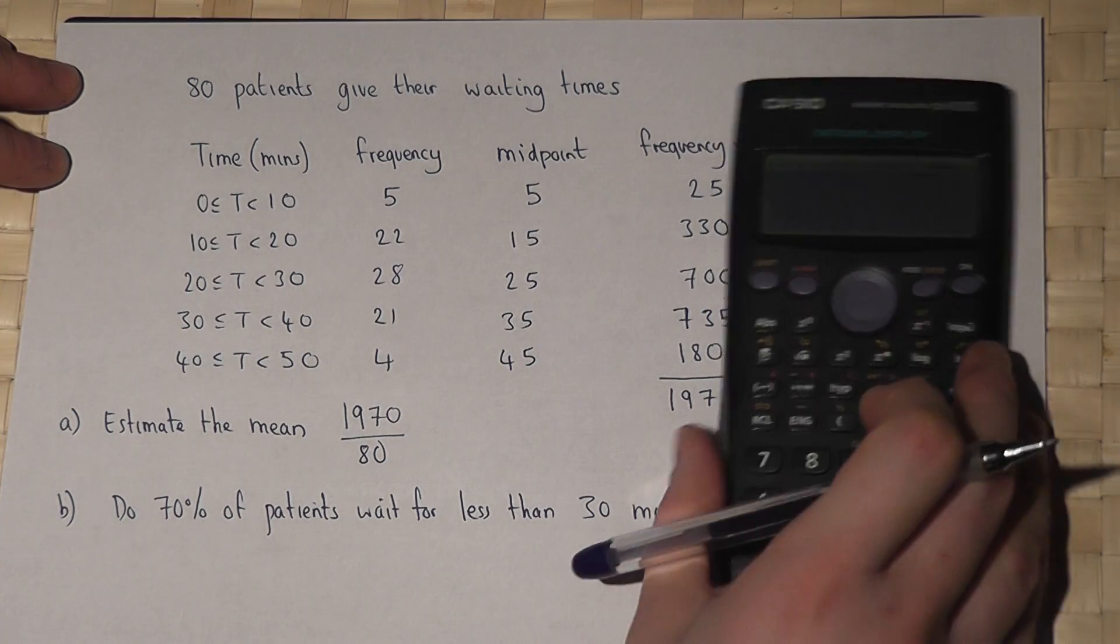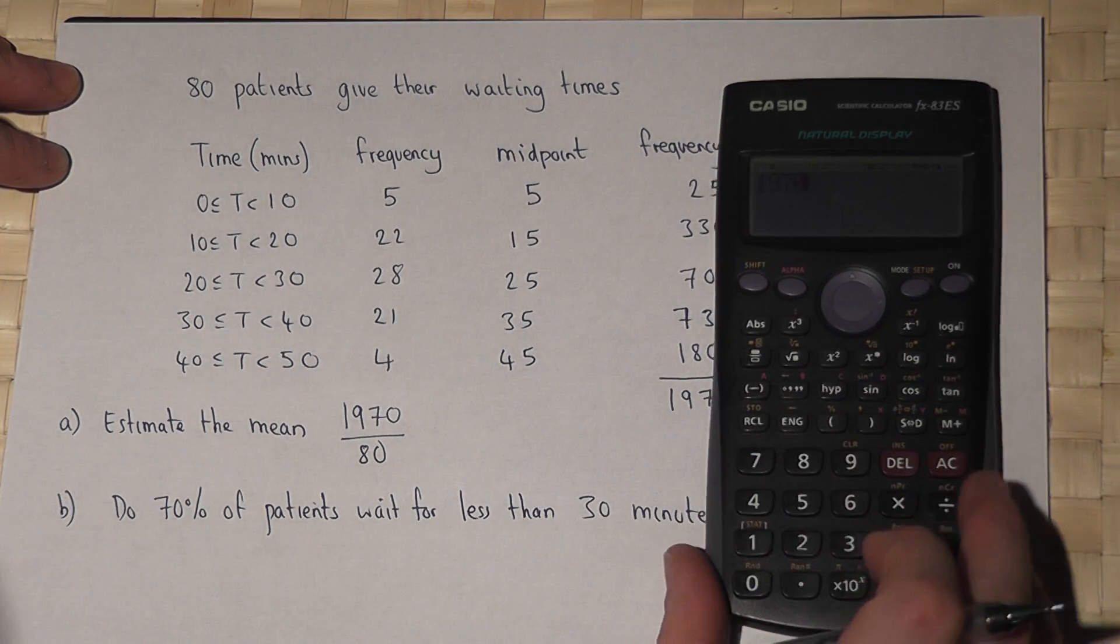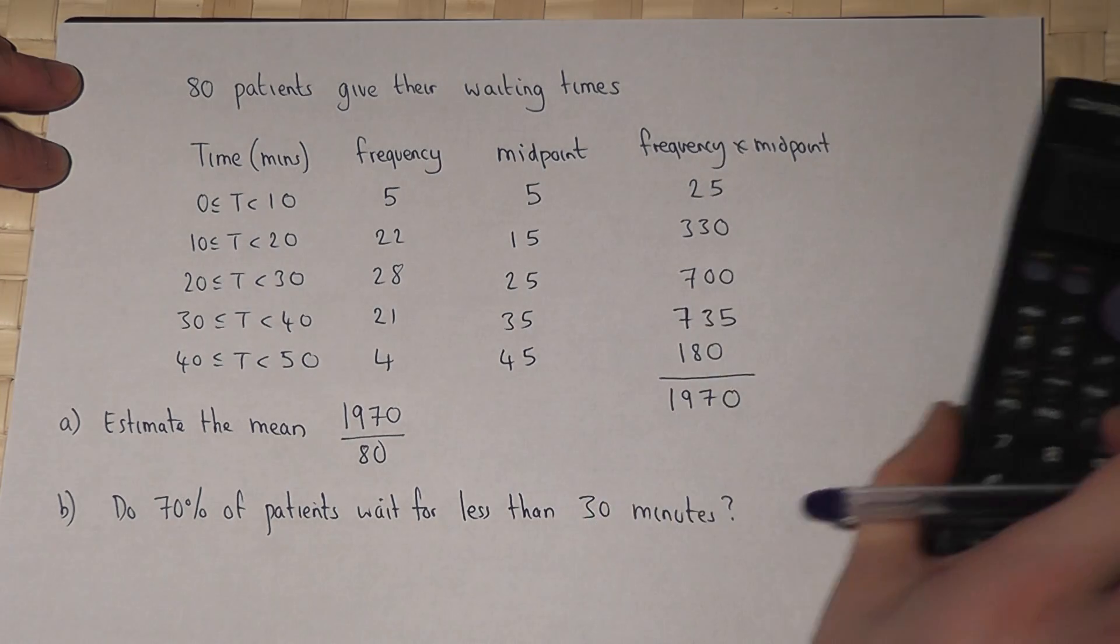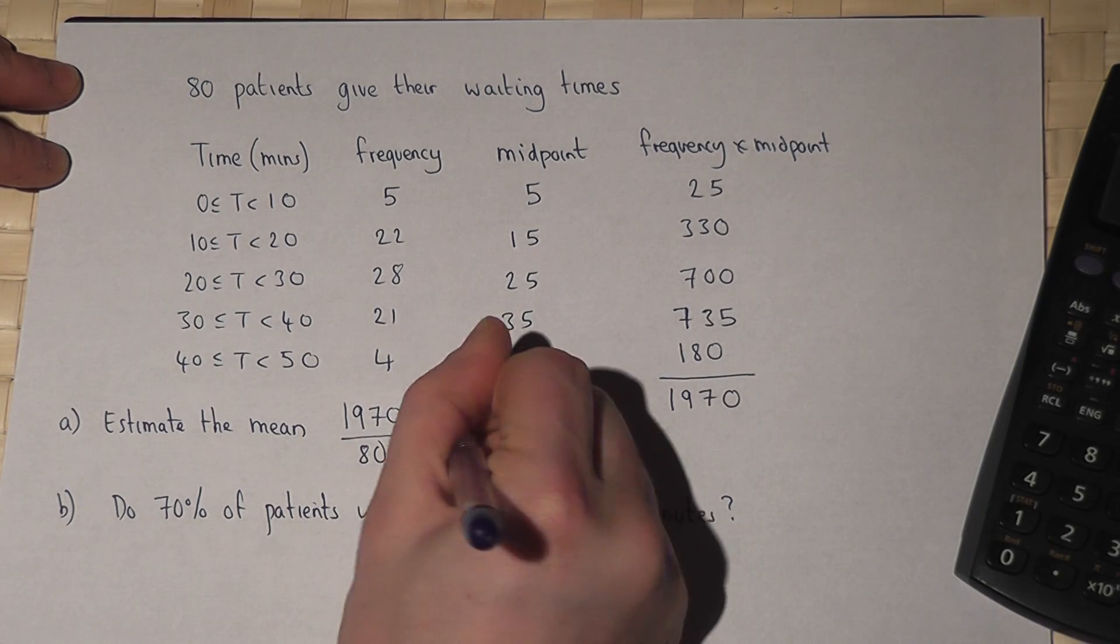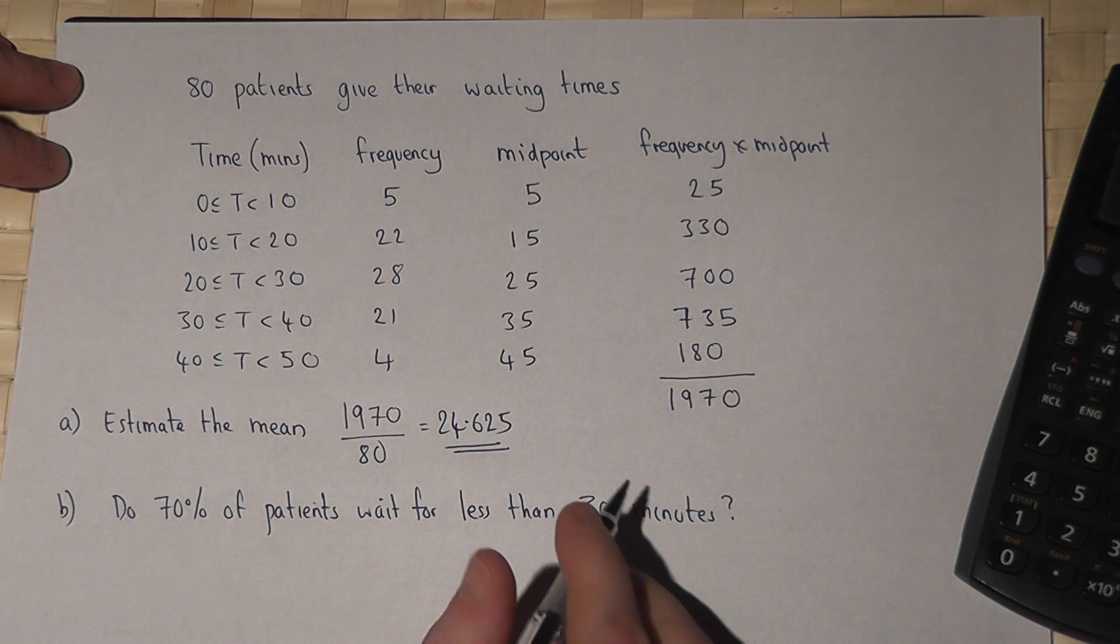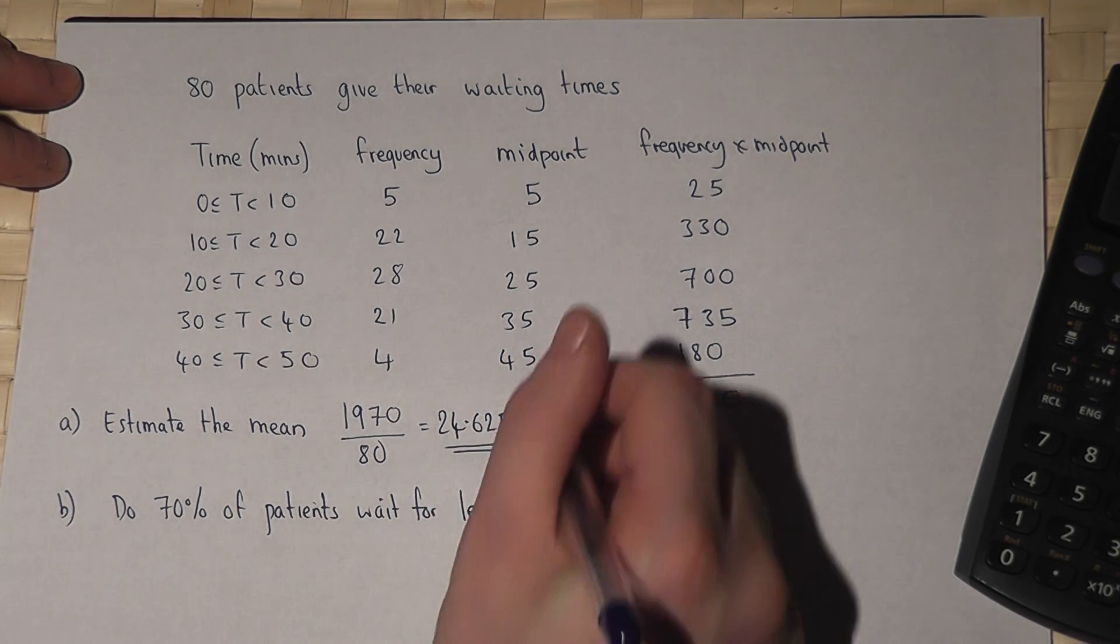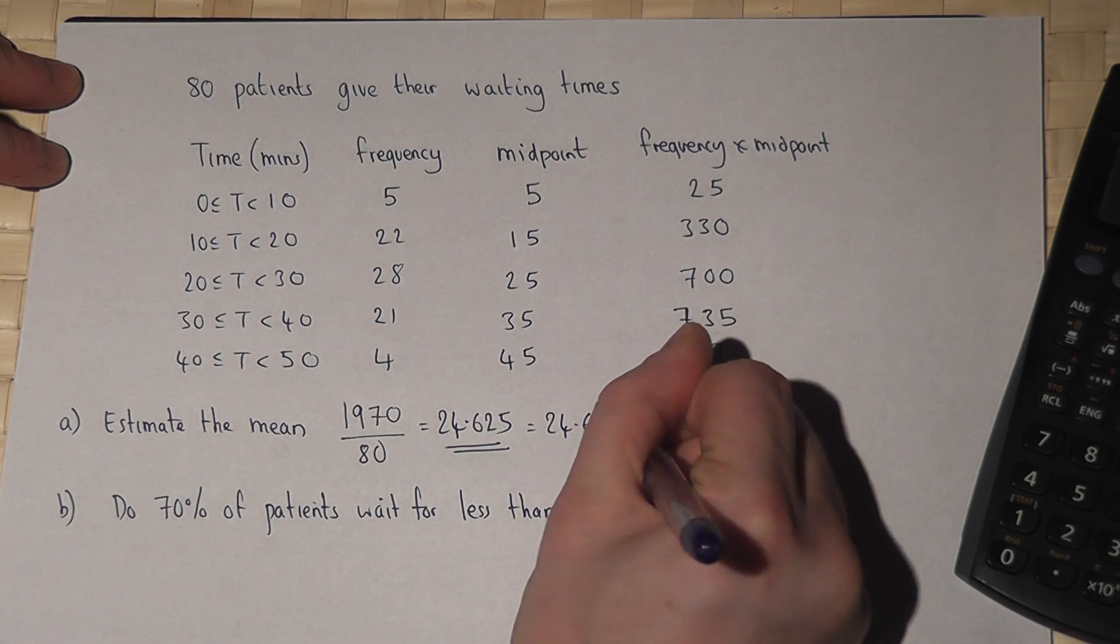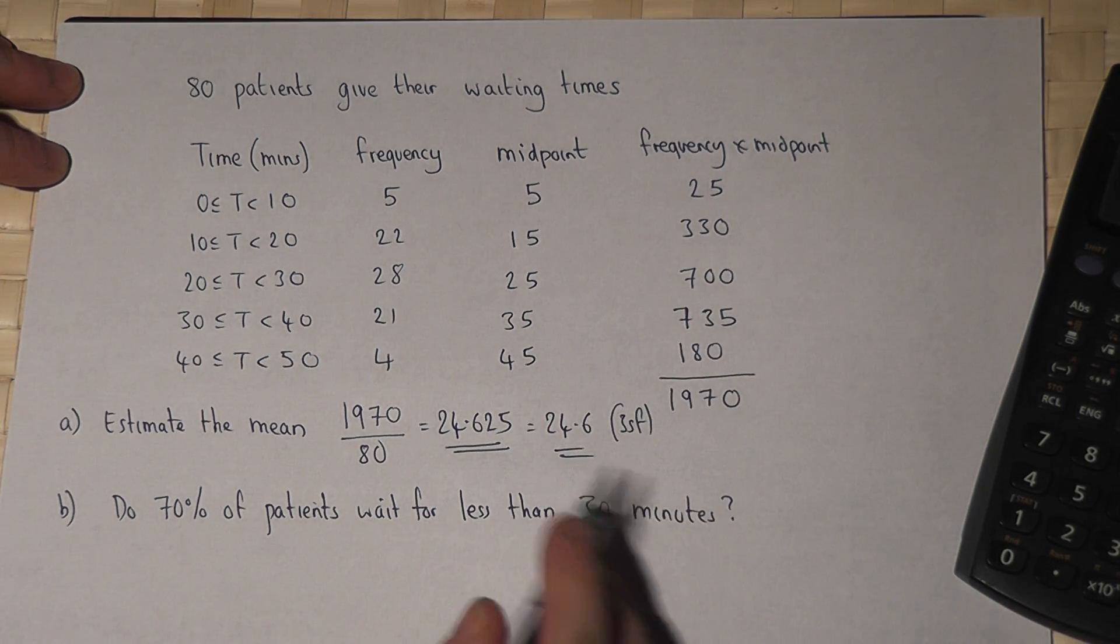And if we do 1970 divided by 80 it works out to be 24.625. So the average waiting time was 24.625 which is 24.6 to 3 significant figures and that's in minutes.